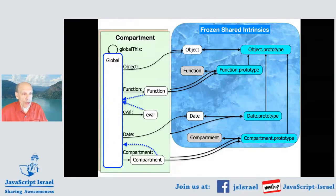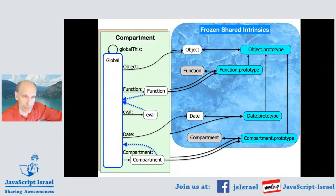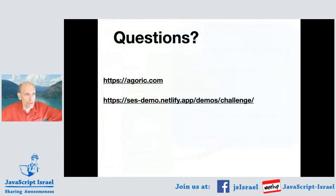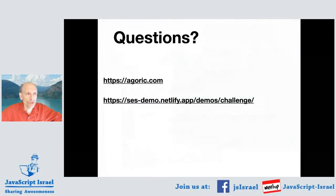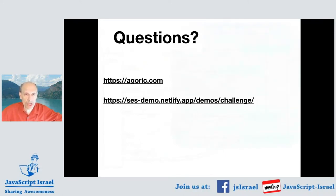And that is the brief overview of SES. For more information about SES and what Agoric builds on SES: Agoric is building a smart contracting platform that runs on both blockchains and non-blockchains, providing distributed secure SES. All of those are explained at agoric.com. The particular challenge that we invite you to take—to try to read that side channel—is at that URL. And now I'll take questions.